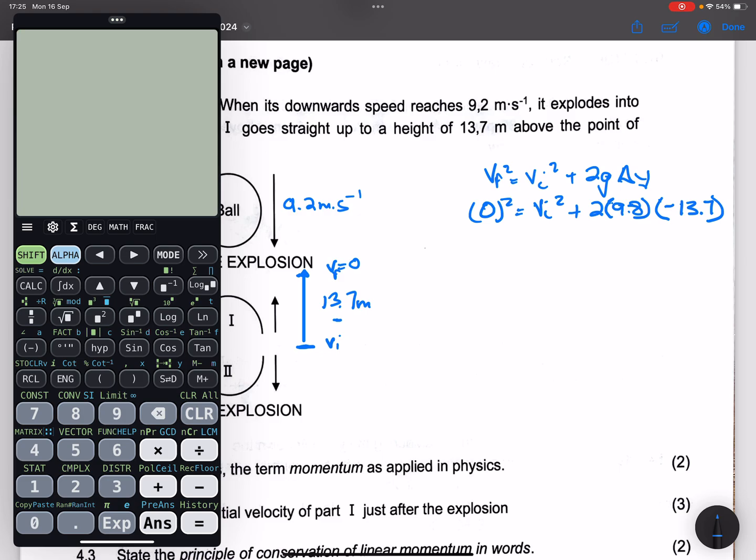So let's find out what our initial velocity is. So we're going to have 2 times 9.8 times 13.7, but remember when I take it to the other side it will become positive.